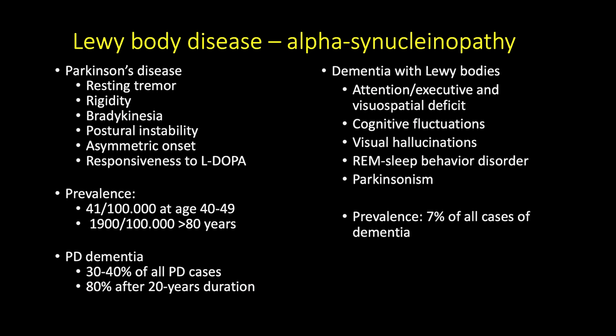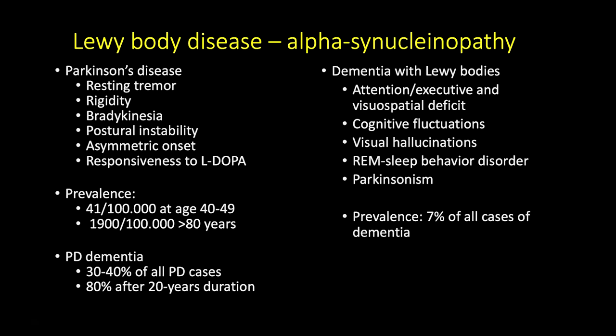Parkinson's features include resting tremor — a tremor that kicks in while the patient is not moving, which may improve during movement and reappear when movement stops. Patients become very rigid and stiff, usually asymmetrically, with one side more affected than the other. There is bradykinesia, meaning slow movement, which is one of the most cardinal features — everything is slowed down, including walking, turning, and even thinking. Postural instability leads to a tendency to fall.